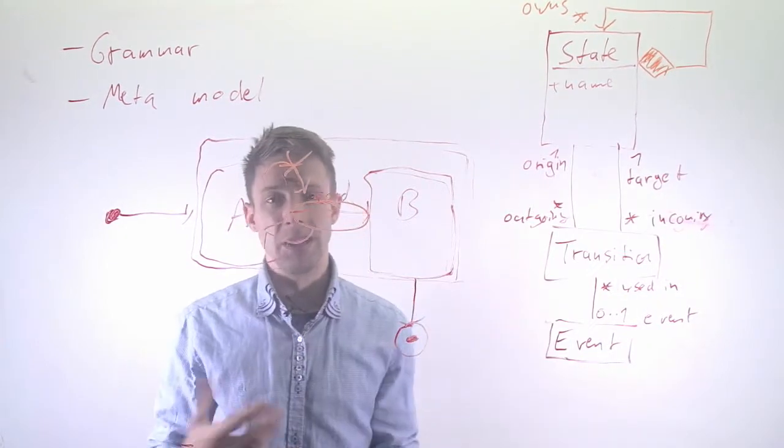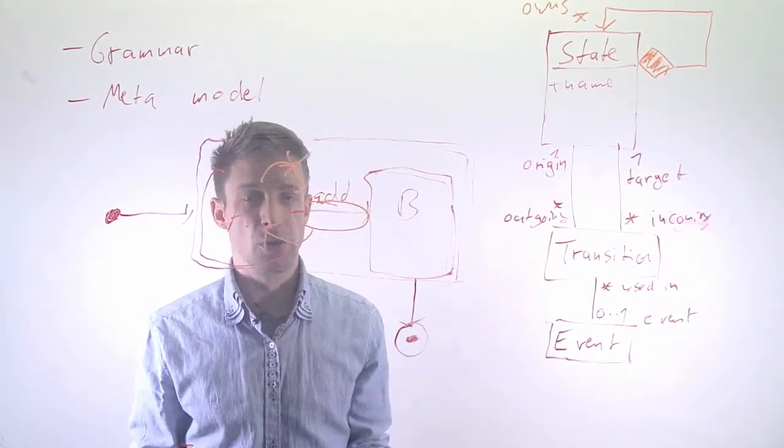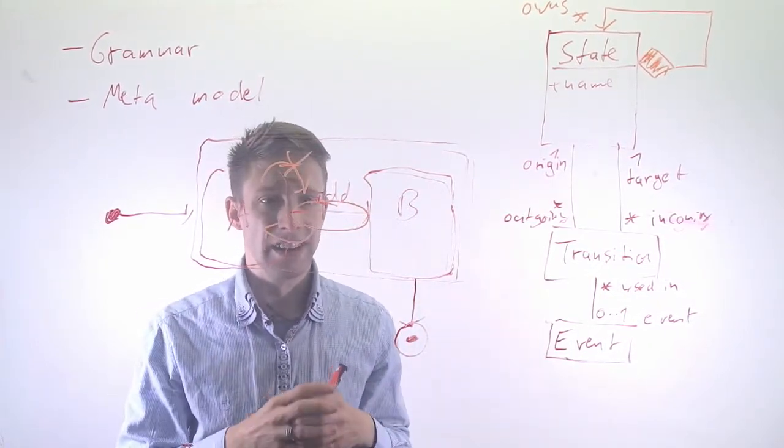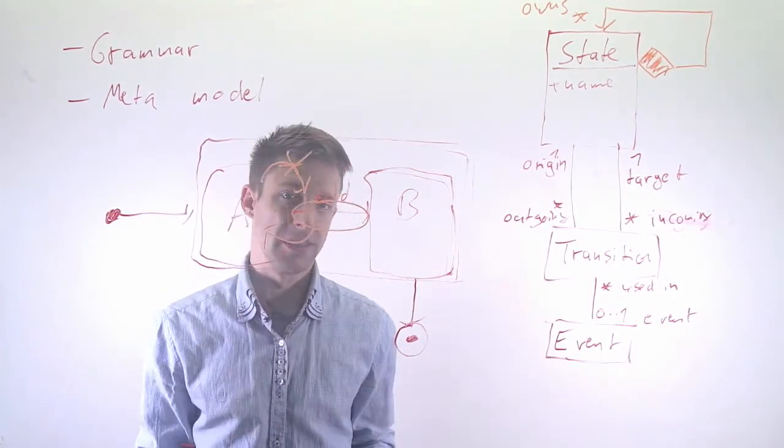So usually we enhance these meta models by additional constraints to make it consistent, that you can only do valid models basically.